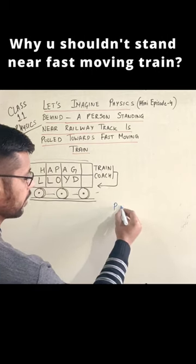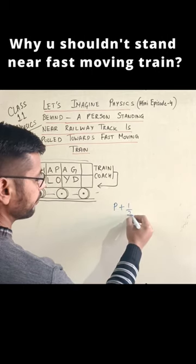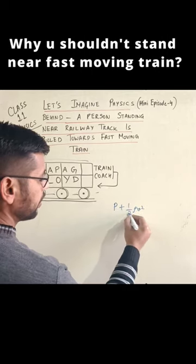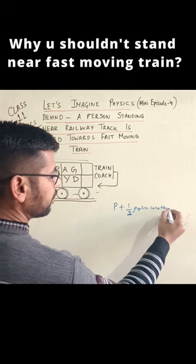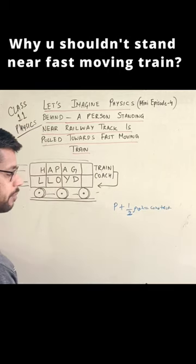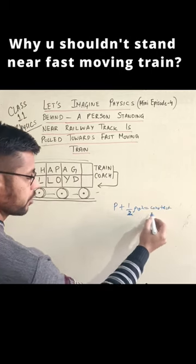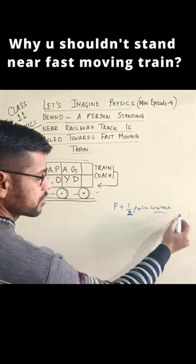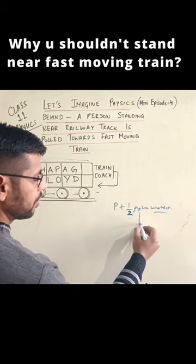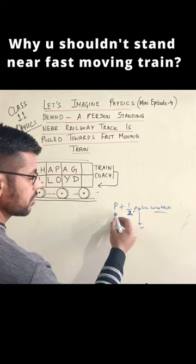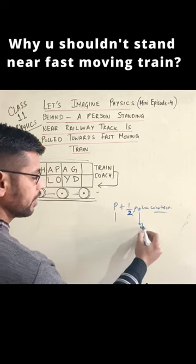Why is this? According to Bernoulli's equation, p plus half rho v squared is constant. This is Bernoulli's equation for a horizontal plane. When p plus half rho v squared is constant, if the velocity is higher, the pressure will automatically decrease.